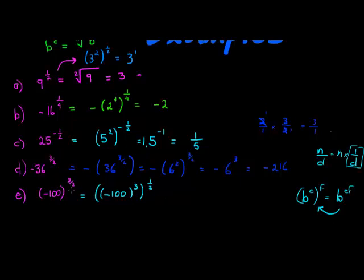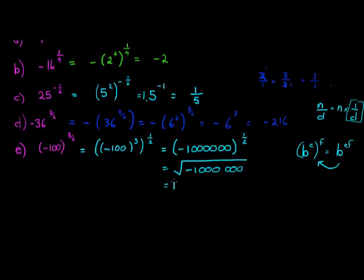So here we have I broke this up into 2 parts. So negative 100 times by itself 3 times, that would give me negative 100 times itself once would be 10,000, times itself again would be 1 million, negative 1 million to the power of a half. And this to the power of a half means square root, the square root of negative 1 million. Now the square root of negative 1 million is not real, it's not a real number.